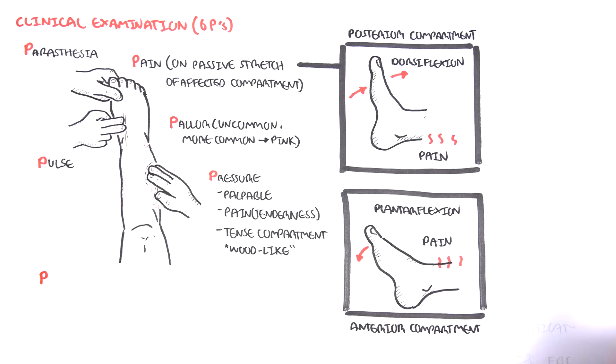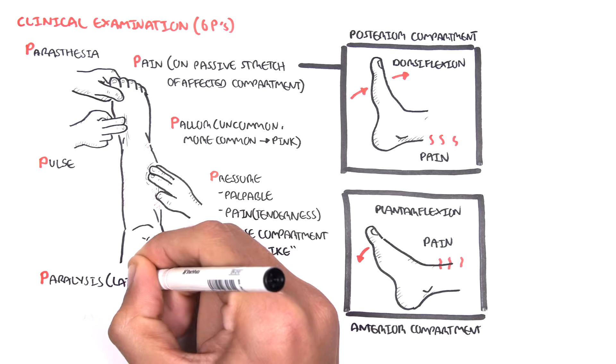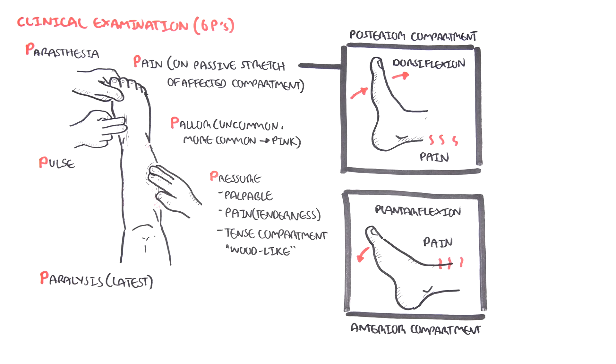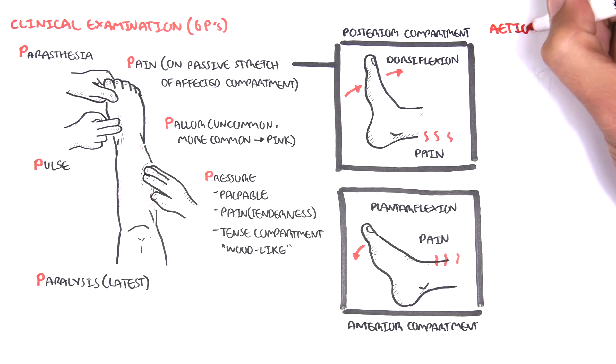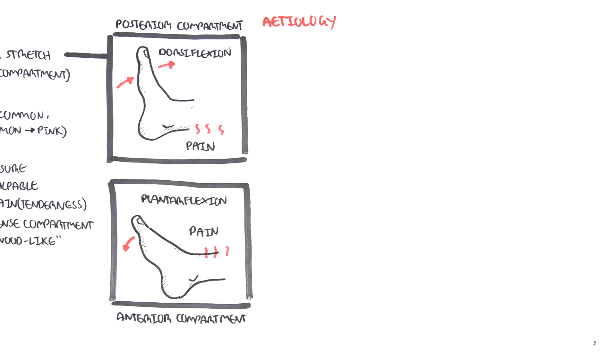The final sixth P is paralysis, which is the latest finding. We briefly looked at the pathophysiology, the signs and symptoms, and clinical examination of acute compartment syndrome.